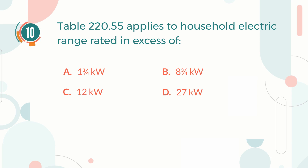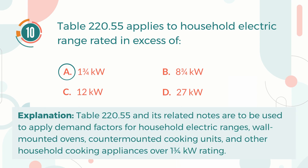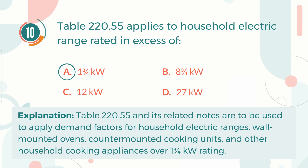The correct answer is A, 1.75 kW. Explanation: Table 220.55 and its related notes are to be used to apply demand factors for household electric ranges, wall-mounted ovens, counter-mounted cooking units, and other household cooking appliances over 1.75 kW rating.